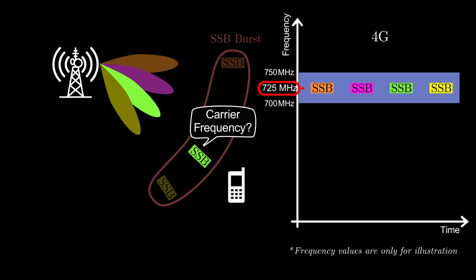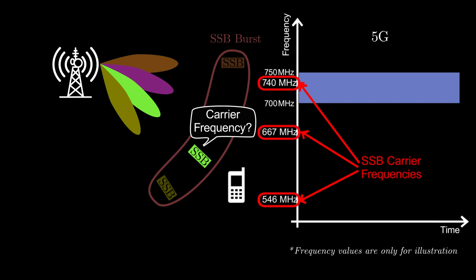However, in 5G, there is a predefined set of carrier frequencies for SSB, and base station selects the one that is within the operating bandwidth, in this case, 740 MHz. The UE does a brute force search on all candidate SSB carrier frequencies to receive SSB signal.